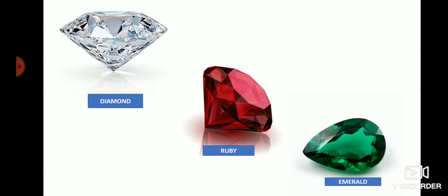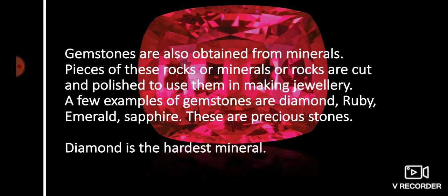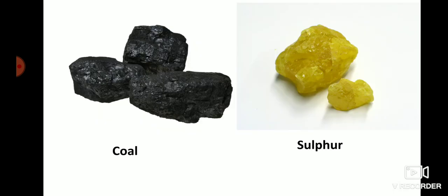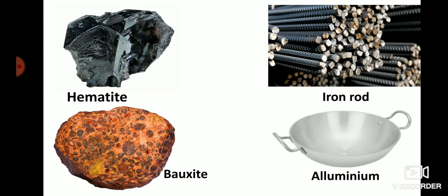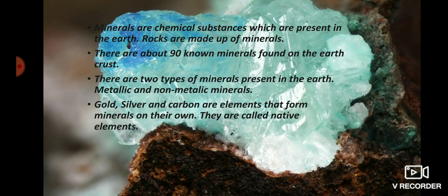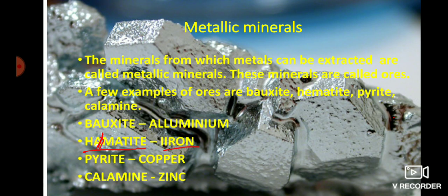So students, today we have learned about minerals, metallic minerals, non-metallic minerals, and gemstones. Gemstones are also non-metallic minerals. Diamond is so hard that it can even cut glass. The mineral talc, which is also a non-metallic mineral, is the softest mineral. Minerals are chemical substances present on the earth's surface, and there are two types: metallic and non-metallic.